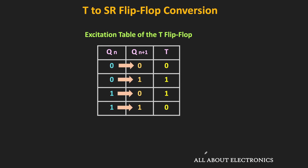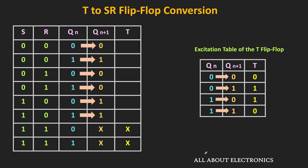With the help of this excitation table, let us complete the full table. For the 0-to-0 transition, T equals 0. For the 1-to-1 transition, T is also 0. In the third case, for a 0-to-0 transition, T is again 0. For a 1-to-0 or 0-to-1 transition, T equals 1. And for the 1-to-1 transition in the last case, T should be 0. In this way, we have completed the entire table.